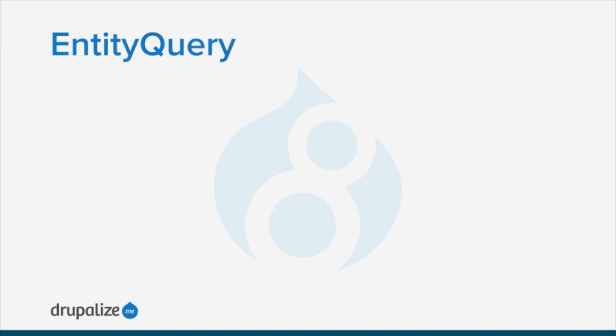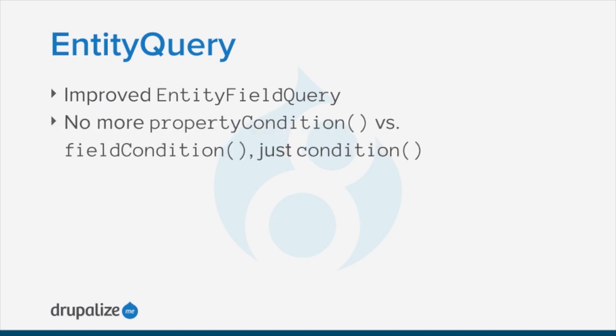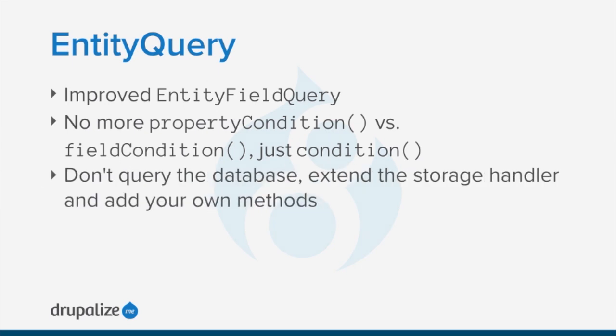There's a new EntityQuery class, which is the next generation of EntityFieldQuery from Drupal 7. Since everything is a field now, you no longer need to worry about the difference between a property and a field condition when querying. And it's super smart about relationships and more complex query options — it's every bit as powerful as the database querying system. With storage handlers for entities, you can and should just extend the default storage handler, which uses EntityQuery, and add custom methods to it. This helps to encapsulate your customizations and makes discovery and maintenance a lot easier down the road.